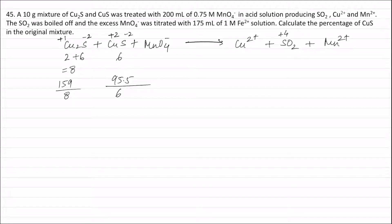Let the weight of Cu₂S in the mixture be x grams, so the weight of CuS in the mixture will be 10 − x grams.